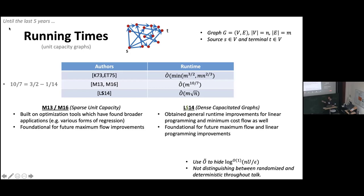Until the last five years, the state of the art was due to improvements by Madri, Yintat Lee, and myself. On one hand, Madri had a beautiful result improving the sparse case from M^(3/2) to M^(10/7), where 10/7 is 3/2 minus 1/14. Yintat Lee and I had a result improving the dense case from M times N^(2/3) to M times fourth-root-N. Both cases were built on interior point methods and optimization techniques useful for a number of improvements.